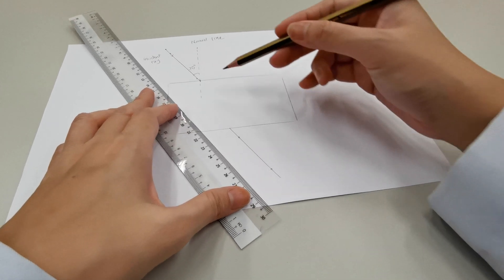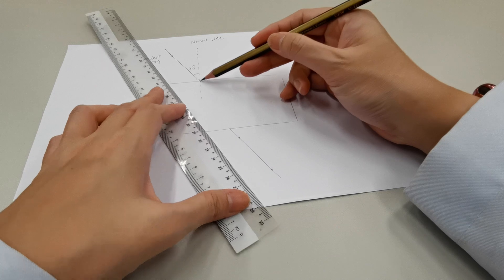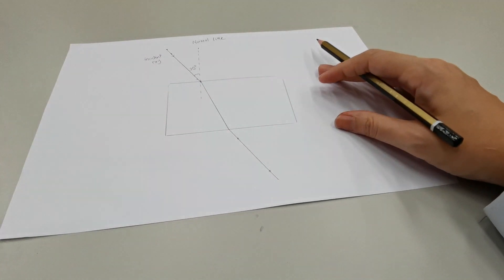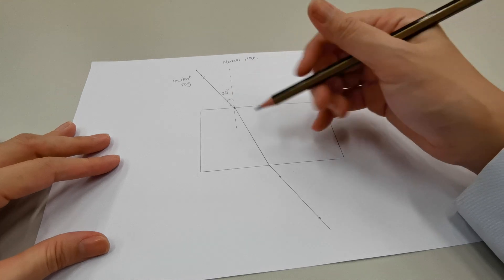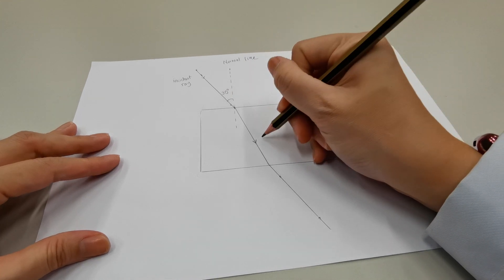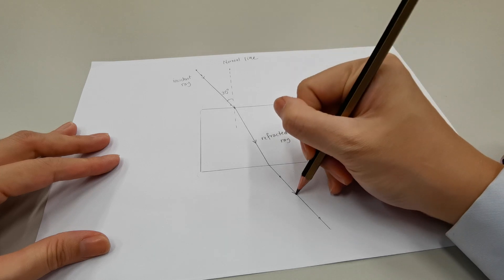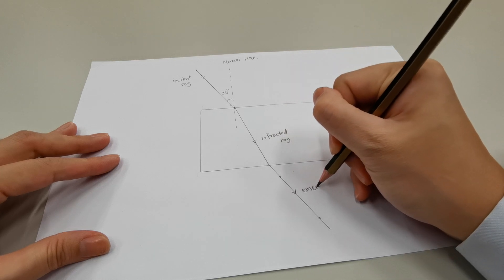Then, we need to connect the two points on the opposite edges of the glass block in a straight line that will represent the refracted ray. Just for clarity, we will label the light rays as the refracted ray and emergent ray.